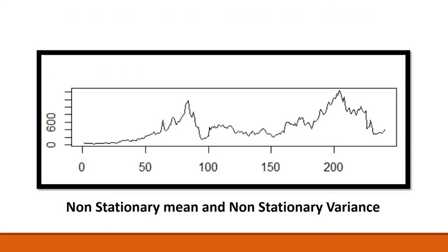Now let's look at this diagram. As I've mentioned, whenever you have data, first try to plot it as a graph. If we plot this data, you can see that neither there is a constant mean nor a constant variance. On the x-axis is the time period and on the y-axis are the prices. If you put a mean line, say the mean is 100, you will not see every series having a mean of 100, and the variance is also not constant. So looking at this graph, I can say the data has a non-stationary mean and non-stationary variance — it is a non-stationary series.